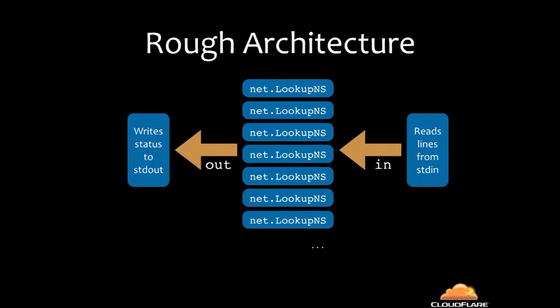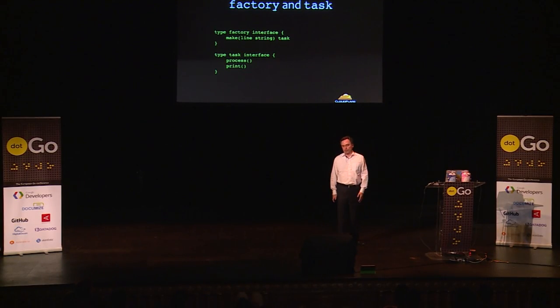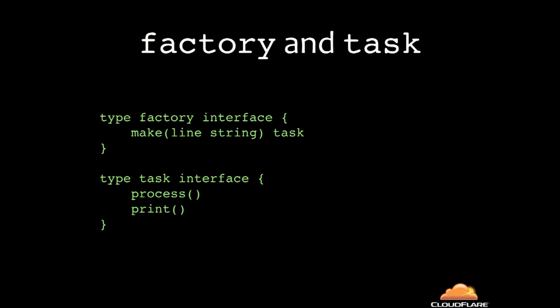Now I've got a concrete program I can refactor using interfaces. A really nice thing about Go: rather than thinking upfront about your type hierarchy, I started from a real program and now I can generalize it. So the architecture has something producing work, a load of things performing it, and something outputting the results. We can break that up into two interfaces.